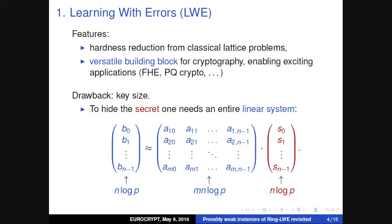There is one main drawback about LWE, and that's a key size issue. If you want to hide this secret — which we think of as a vector of length n — you have to use this entire linear system as a public key. You need a public key of size n² at least. The number of rows has to be strictly bigger than the number of columns; the system has to be overdetermined for the problem to be well defined. You need size n² to hide something of size n.